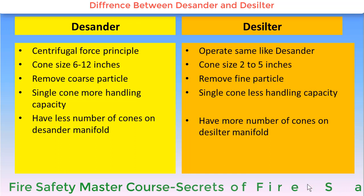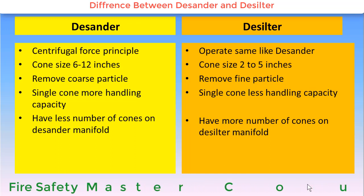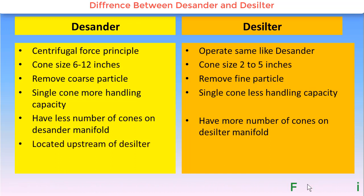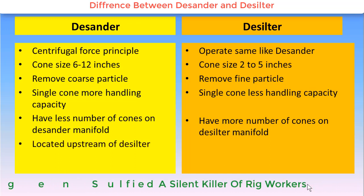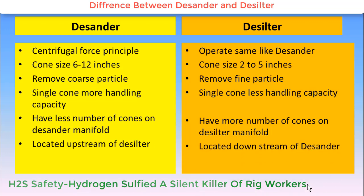Desander is located upstream of desilter, whereas desilter is located on the downstream of desander.